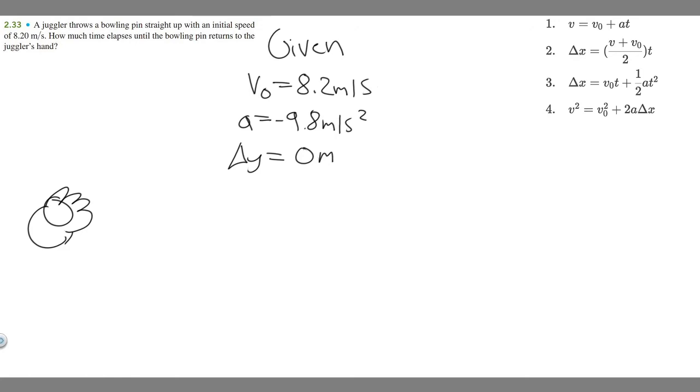So now we've got these variables laid out. Let's find out what they're asking. They're asking how much time. So time, we denote by t. So we're going to say t equals question mark, because that's what we're solving for. So we've laid out what we're given. Now let's look at our kinematic equations and decide which we're going to use to solve.